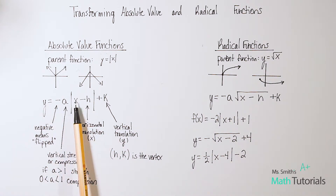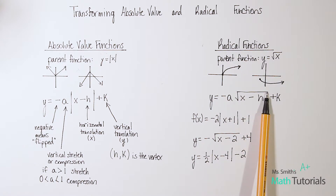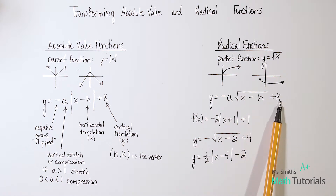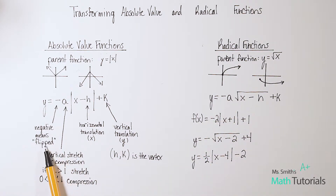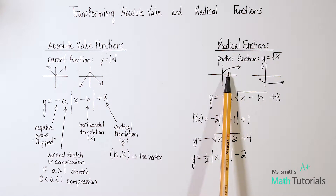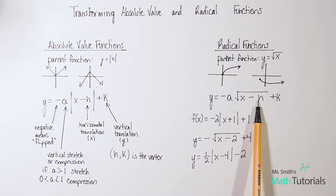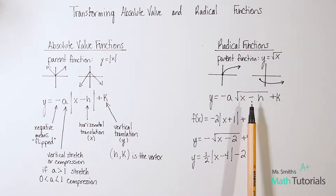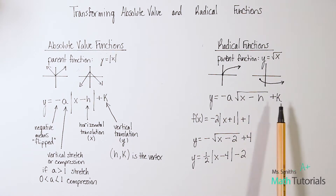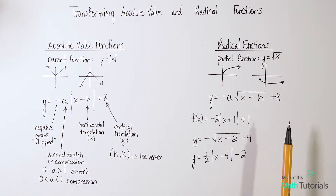Notice the similarities: y equals negative a times the square root of x minus h, plus k. The negative here also means flipped. The h also moves the opposite of what you'd think — if it's negative, we're moving to the right; if it's positive, we're moving to the left. And k on the outside is straightforward: if it's positive, we're moving up; if it's negative, we're moving down.